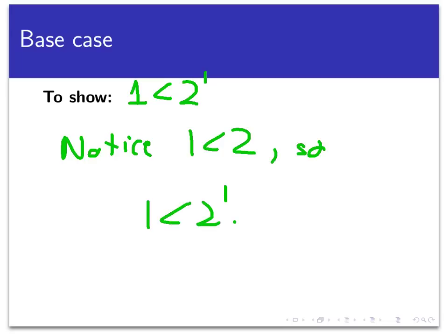Base case is very easy this time. What I want to do is show that P of 1 is true, and that would just be showing that 1 is less than 2 to the first power. So there's not much to say here. We're just going to notice that 1 is less than 2. So we could just say 1 is less than 2 to the first, and that very firmly establishes the base case. That was really simple this time. You just almost say that the base case is trivial.